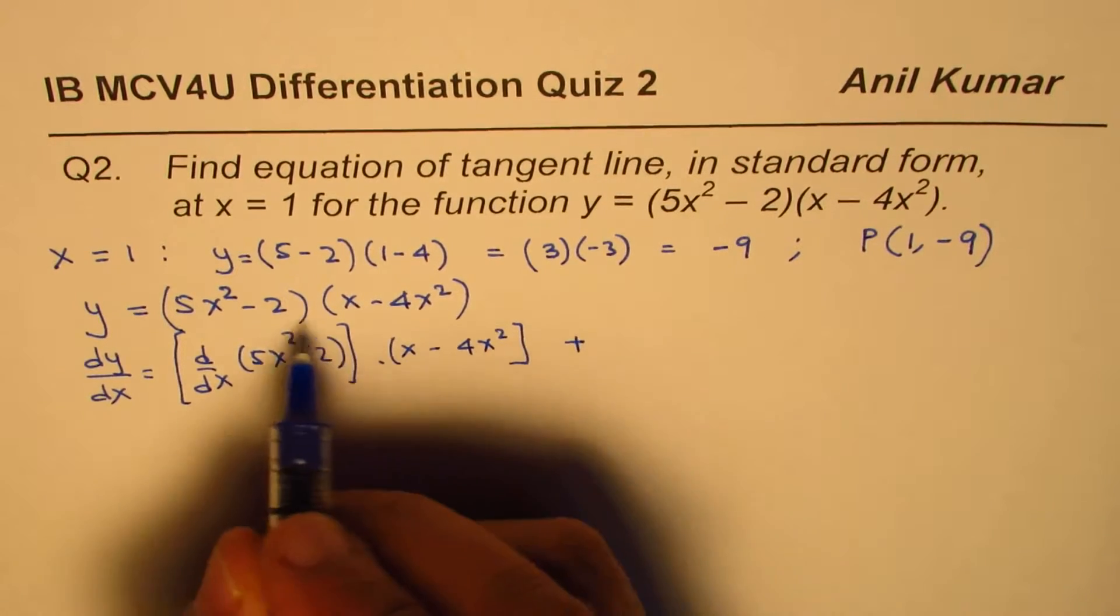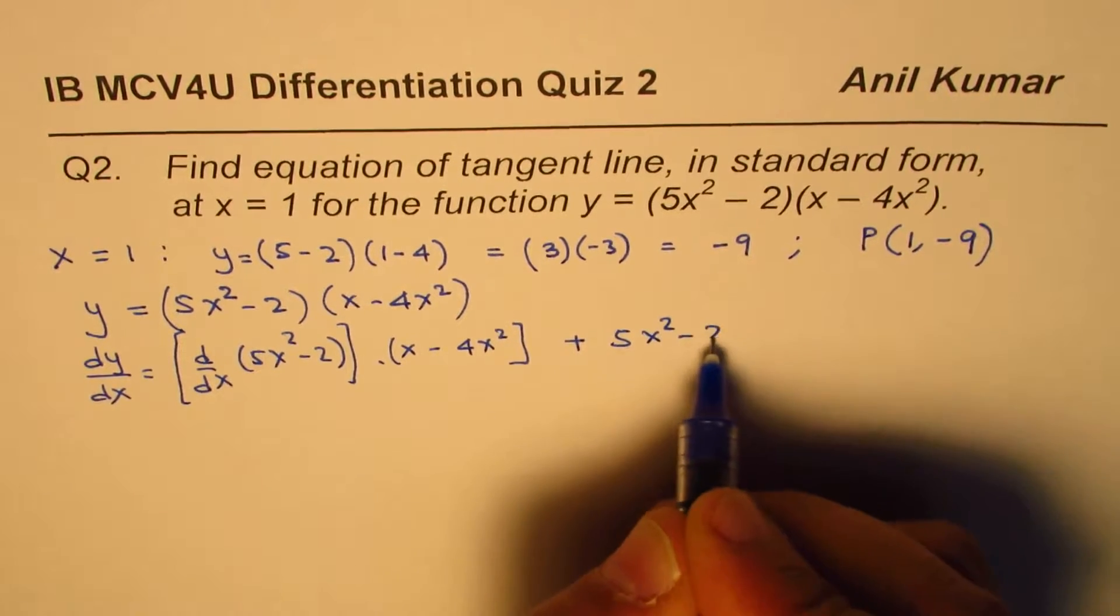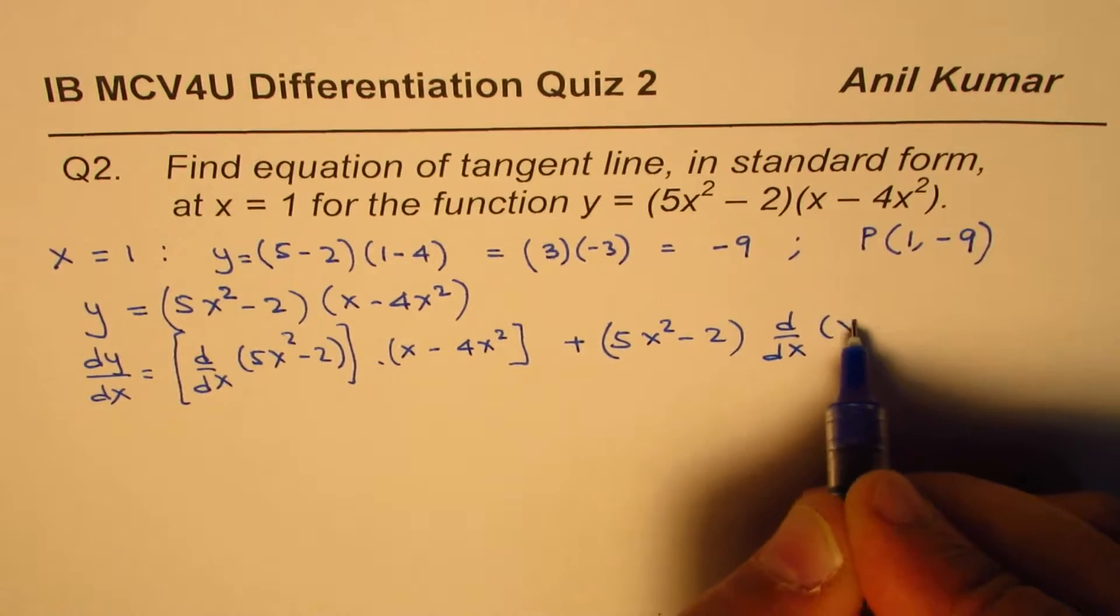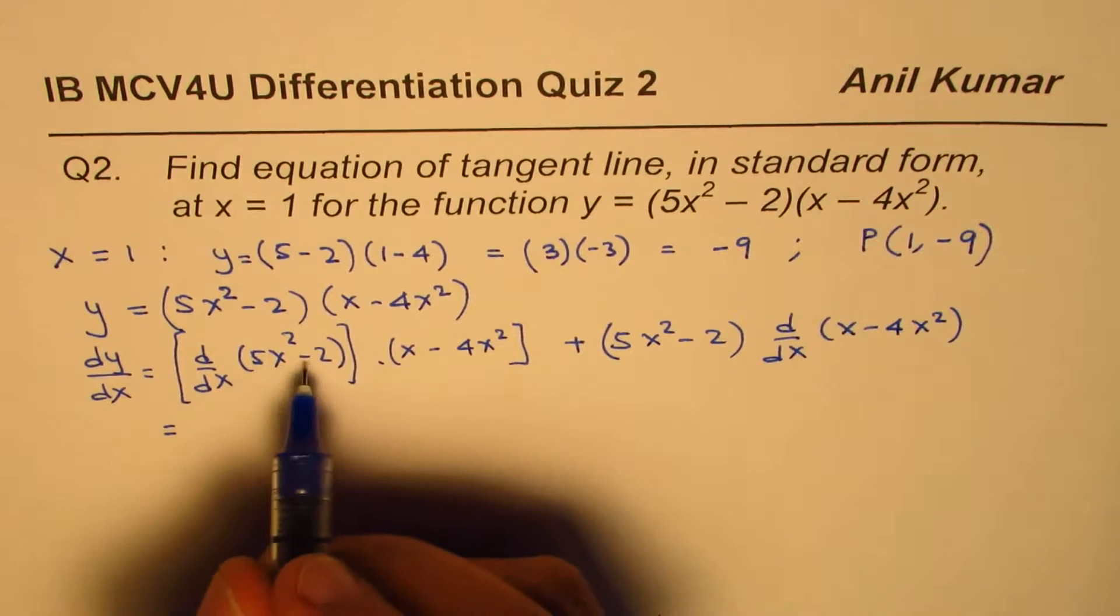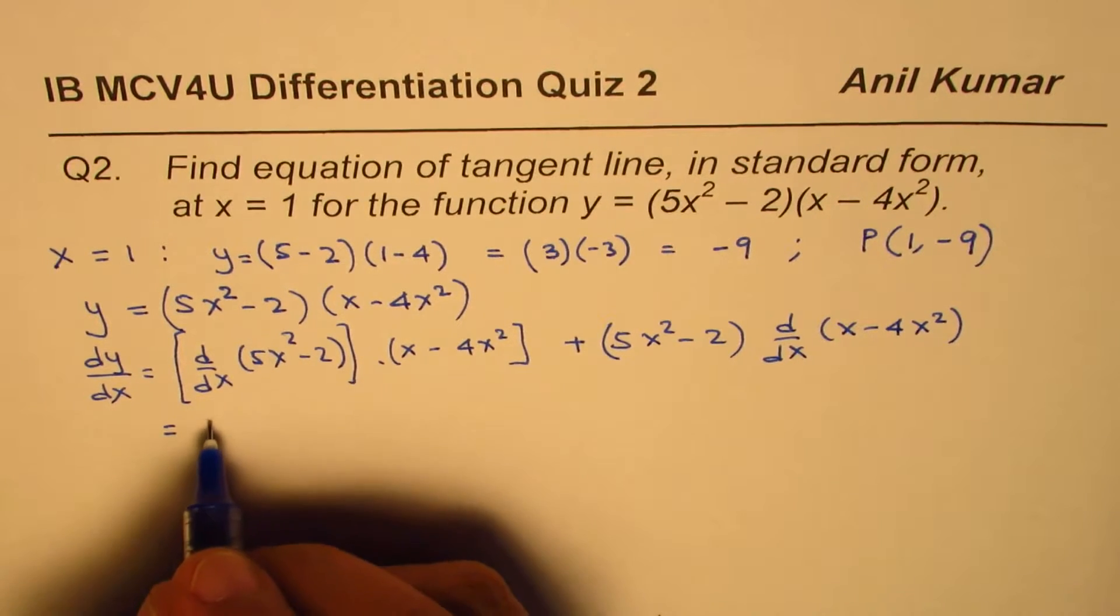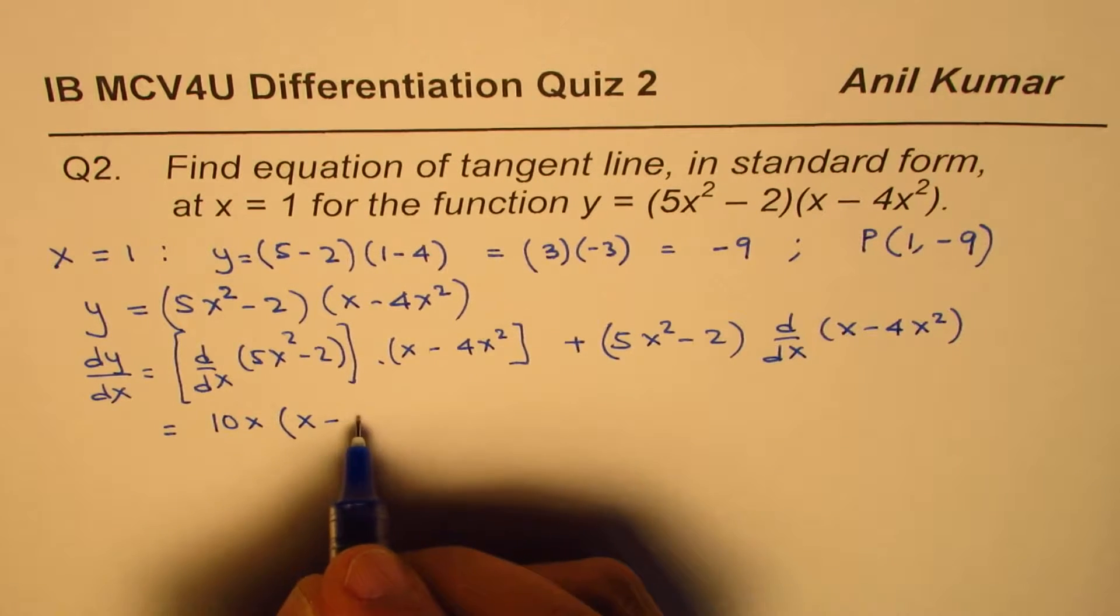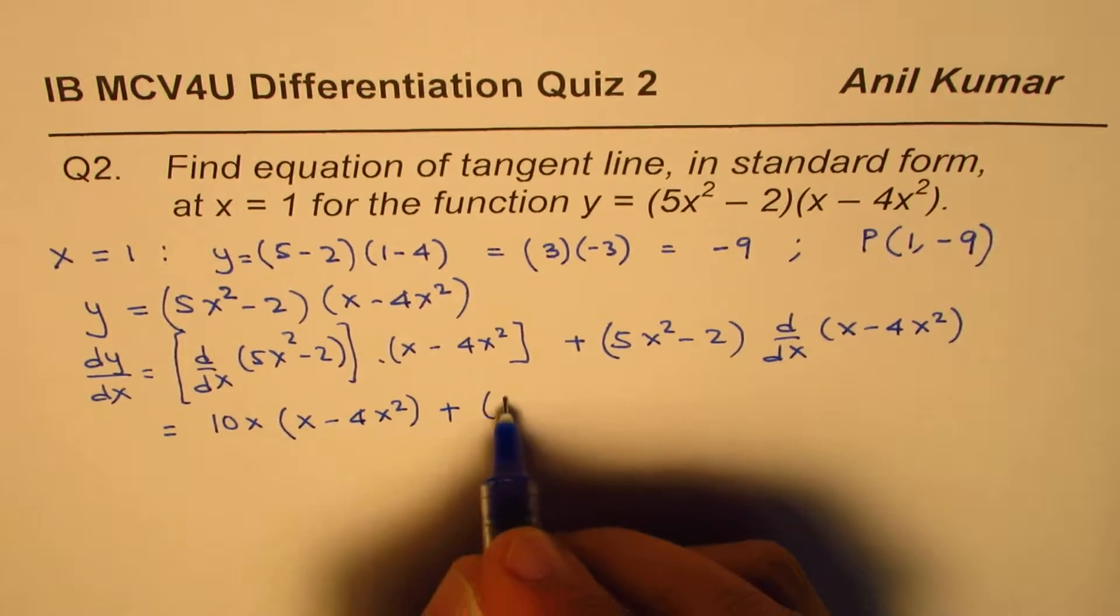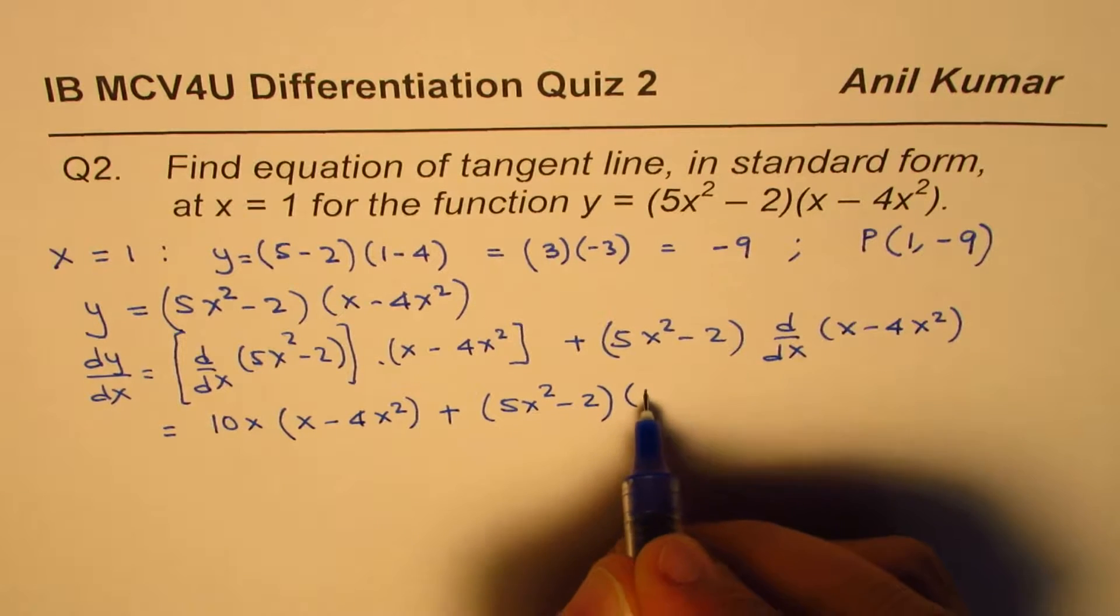Plus derivative of the second function times first. So we can write this as 5x squared minus 2 times derivative of x minus 4x squared. So the derivative of this is 10x. So we have 10x times x minus 4x squared plus we have 5x squared minus 2x squared.